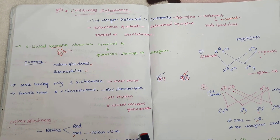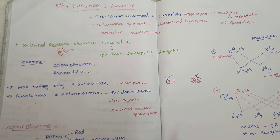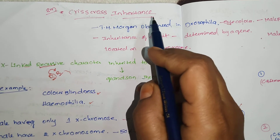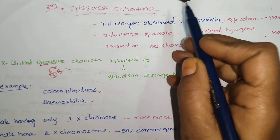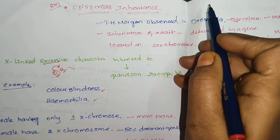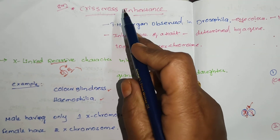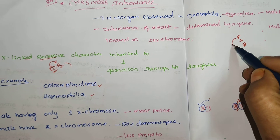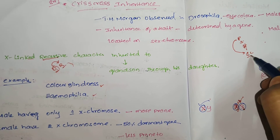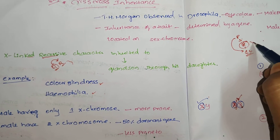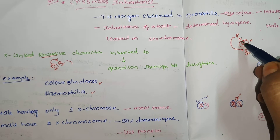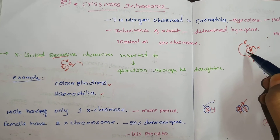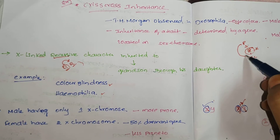Hello everyone, today I am going to explain crisscross inheritance. It is in the genetic second year biology, and it is also one of the important long answer questions. First of all, inheritance means heredity — the transformation of characters from parent to offspring, that is from parent to F1 generation. But crisscross means the skip generation, where characters are transferred not to the first generation but to the grandchildren. That is why one generation is skipped, and it is called crisscross inheritance.